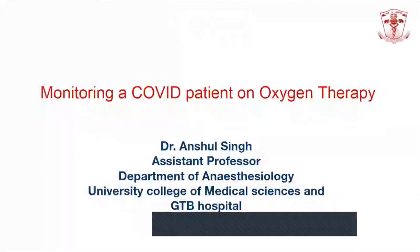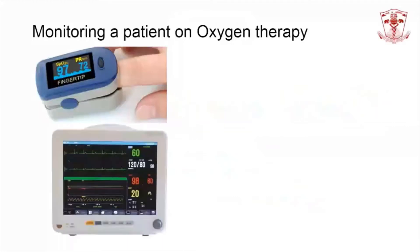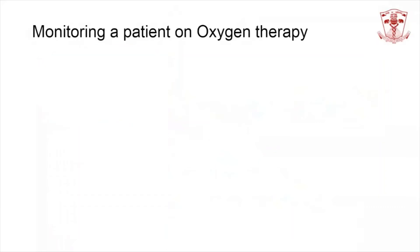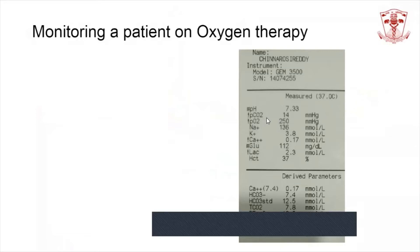The most important parameter measured to monitor a COVID patient on oxygen therapy is oxygen saturation. Other parameters included are blood pressure, pulse rate, and ECG, as well as arterial blood gas sampling that helps us detect the partial pressure of oxygen in the blood, the partial pressure of carbon dioxide in blood, and the pH.